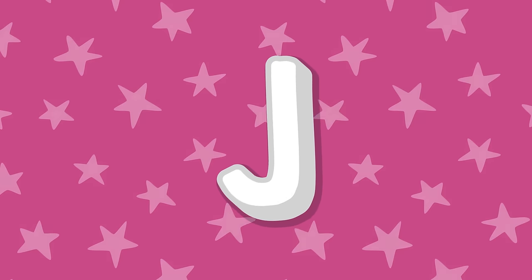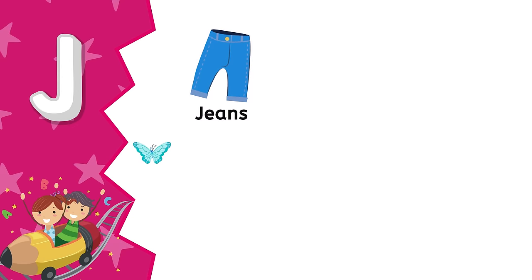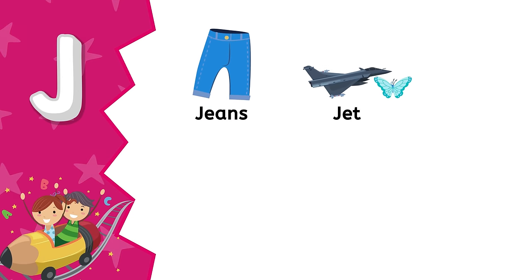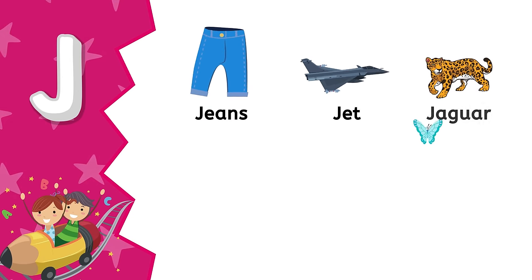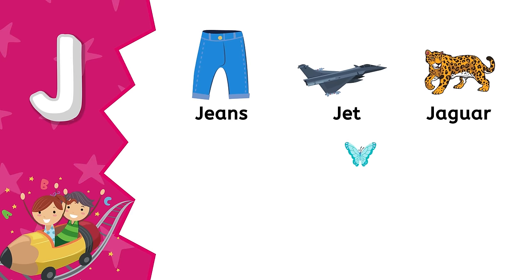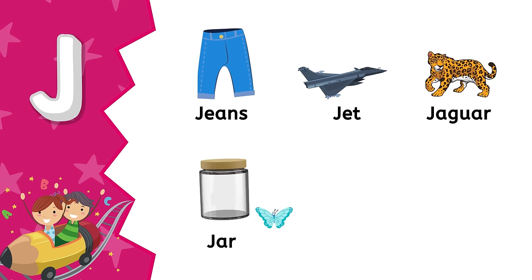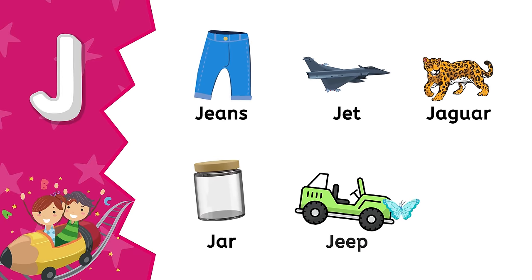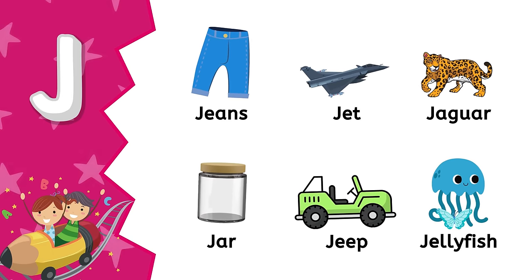J. J is for jeans. J is for jet. J is for jaguar. J is for jar. J is for jeep. J is for jellyfish.